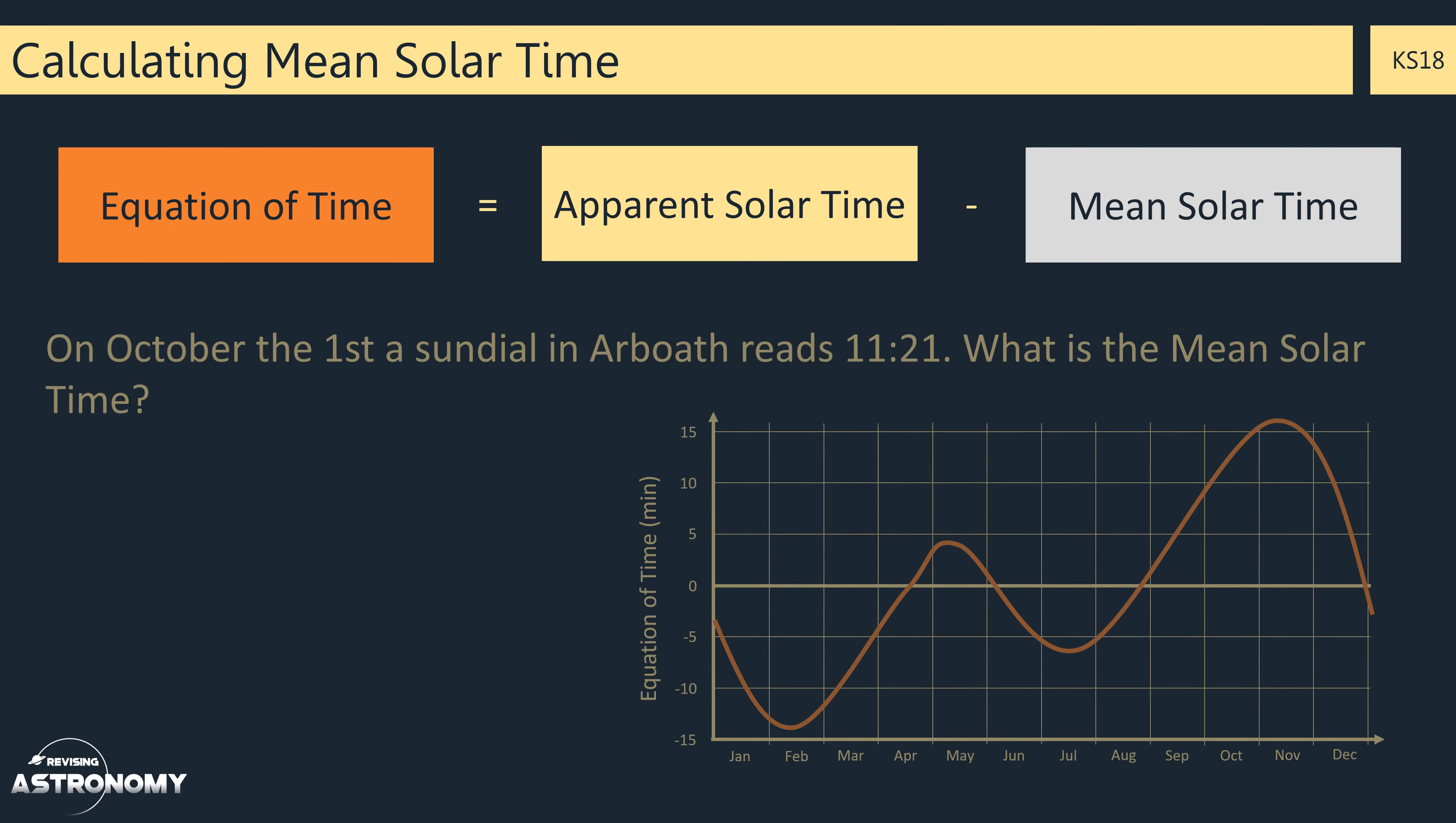This next question is a little trickier as we have to use the graph. It states that on October the 1st, a sundial in Arbroath reads 11:21, and we need to work out the mean solar time. Now here, we need to calculate the equation of time. Usually on graphs like this, they'll either choose the start, end or middle of the month, as they're an estimation of this scale. So the 1st of October will be here, going up to the line, and then across, we can see that on this date, the equation of time is around about plus 9 minutes.